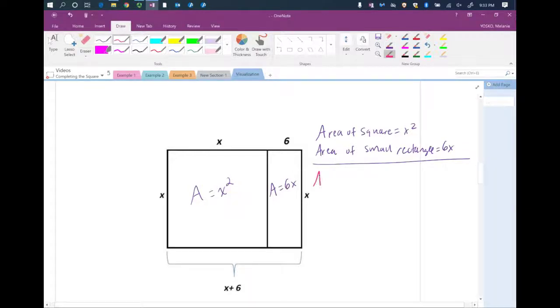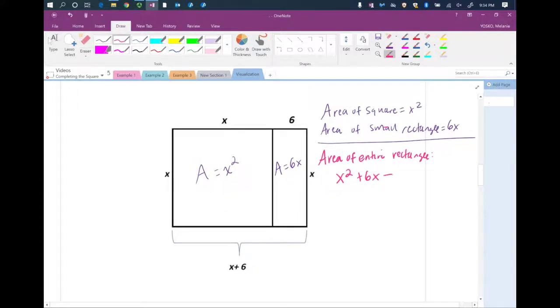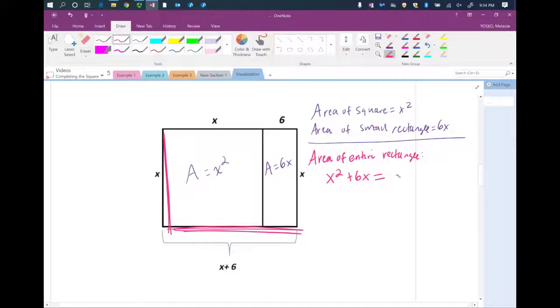So now let's consider the area of the entire rectangle. So I'm talking about this part right here. So if I want that area, I can do it two ways. I can say that's x squared plus 6x, right? Add this and add this. Or I could say, I could also look at this as length times width. So this dimension times this dimension. So I could see that's x times x plus 6. And mathematically, aren't those equivalent? If I distribute this x here, don't I get this? I do. So that's interesting. So there's two different ways to write the area of that rectangle.